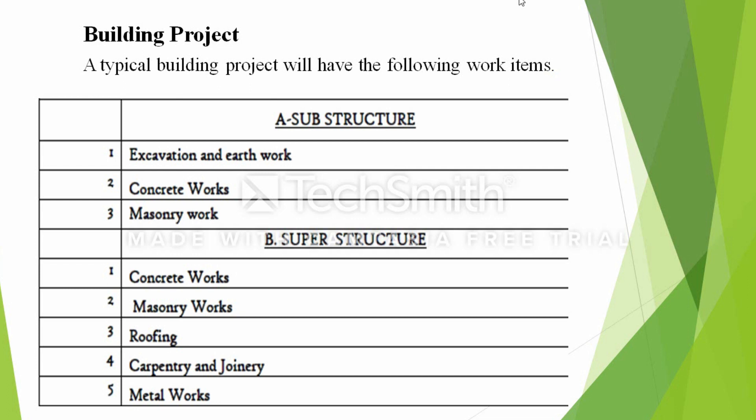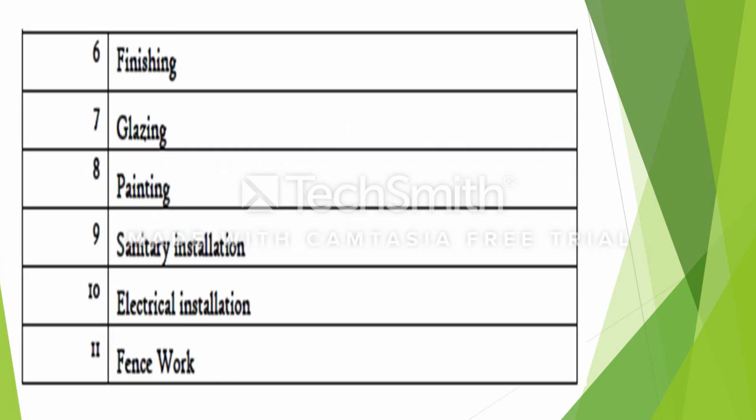If you think about the superstructure, you will recognize the foundation must be strong. The superstructure includes elements such as concrete, carpentry, metal, brass, and finishing — such as chalk, column, board. The superstructure also includes glazing, painting, sanitary installation, and electrical installation. Fence work is also done as part of the superstructure.